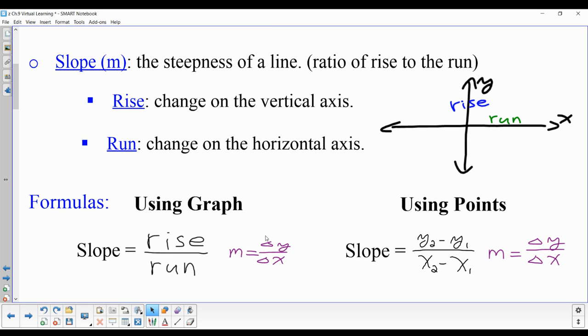When using a graph, it's still the change in y, but you find that by counting the rise. The denominator is still the change in x, found by counting the run—how far right or left you go.